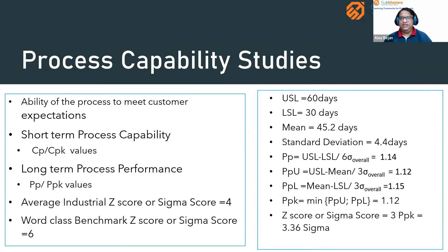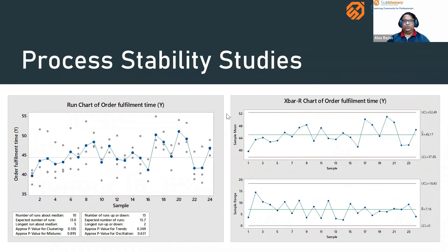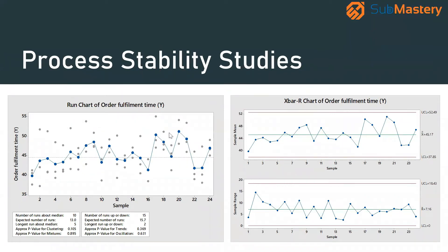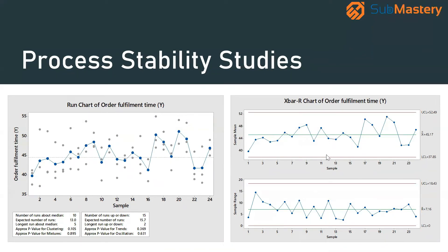We also study the stability of the process in the measure phase to understand current process performance. This is done using a run chart or an X-bar R chart — two different charts developed using a software called Minitab. Both help us understand the stability of the process and identify the presence of special cause variations, which can be studied using a run chart and the X-bar R chart.